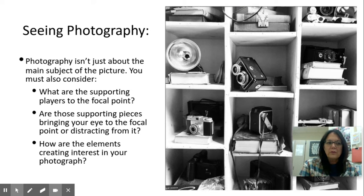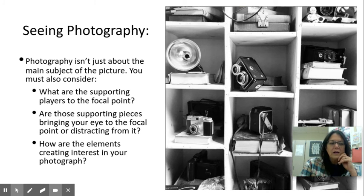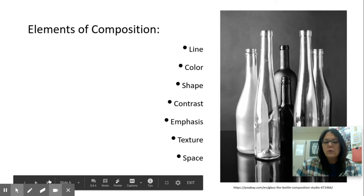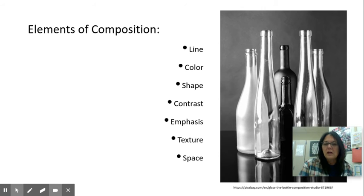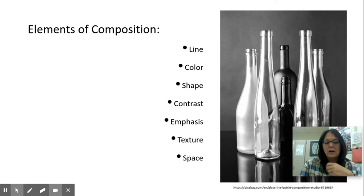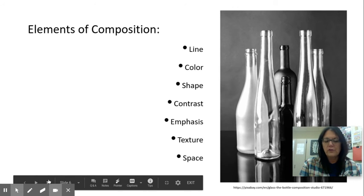Photography isn't just about the main subject of the picture. You have to also consider what else is in there. Are there other things that might distract you from what you're trying to focus on? What are the elements that you want to photograph? We're going to focus on some of the elements of composition: line, color, shape, contrast, emphasis, texture, and space. I'm going to put a worksheet with definitions of the words you're going to have to focus on in Google Classroom for you to look at.